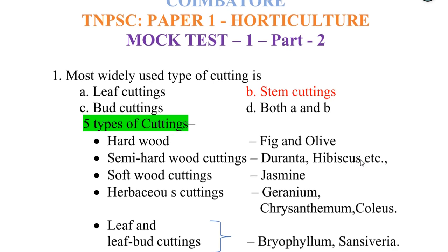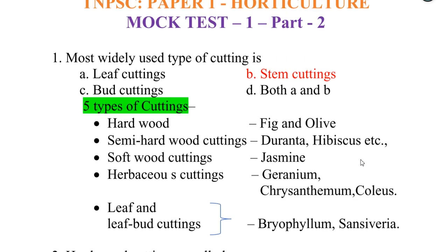First one. The most widely used type of cutting is stem cuttings. There are 5 types of cuttings: hardwood cuttings, semi-hardwood cuttings, softwood cuttings, herbaceous cuttings, and leaf and leaf bud cuttings. Examples: hardwood — fig and olive; semi-hardwood — Duranta, hibiscus; softwood — jasmine; herbaceous — geranium, chrysanthemum, coleus; leaf and leaf bud — Bryophyllum, Sansevieria.